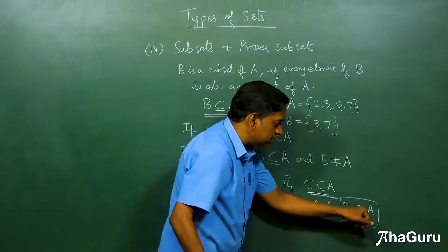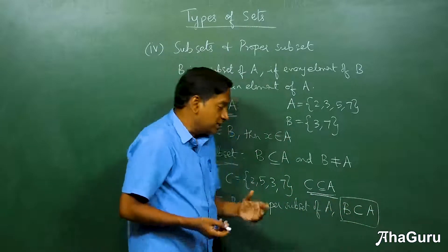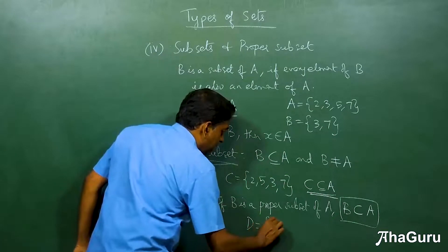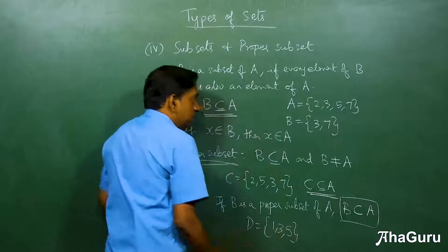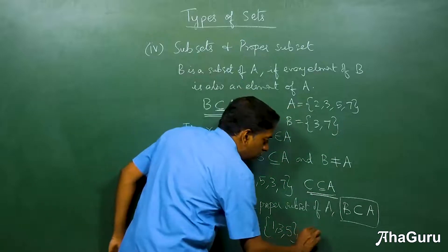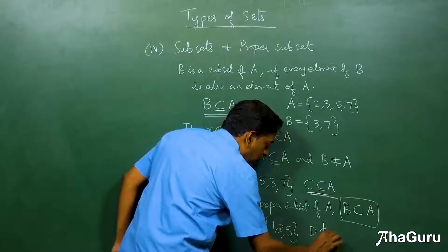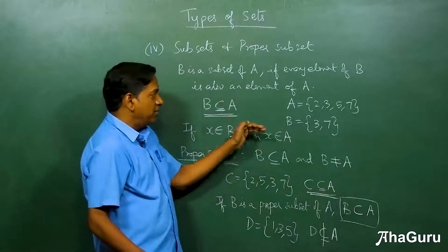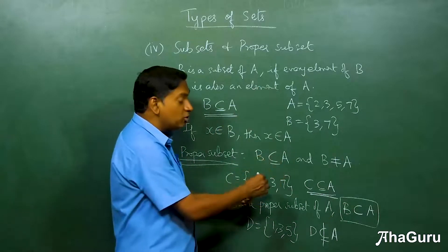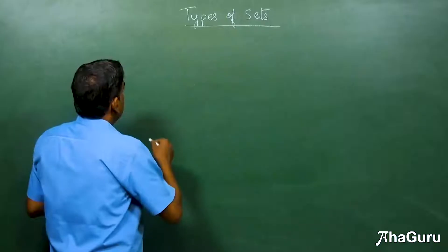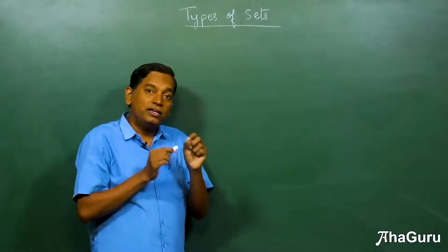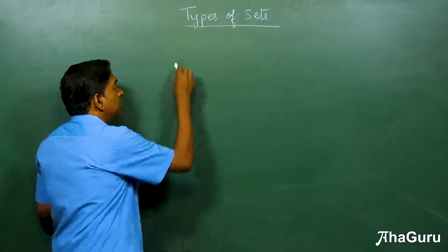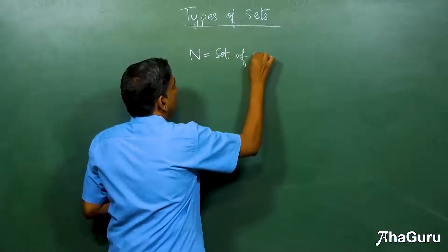If something is not a subset — for example D = {1, 3, 5} — D is not a subset of A = {2, 3, 5, 7} because 1 ∉ A. We denote this with a strikethrough on the subset symbol. Now that we've covered subsets, let's look at standard number sets. N is the set of all natural numbers.